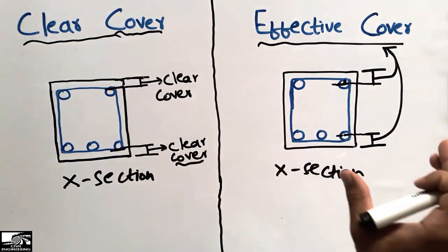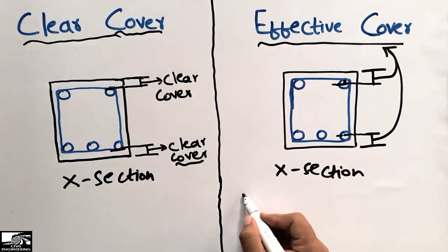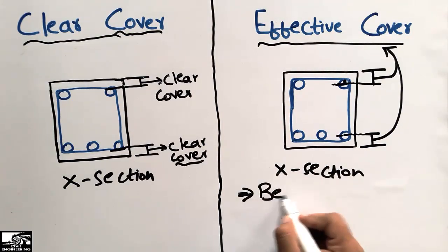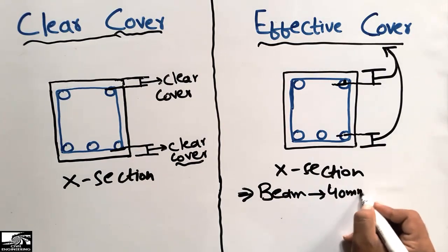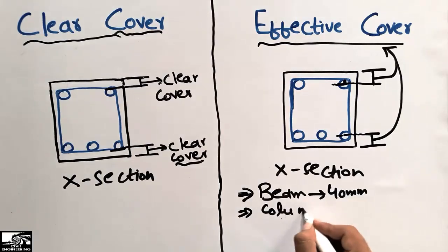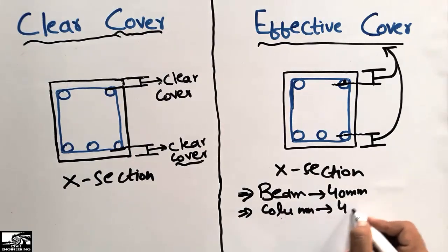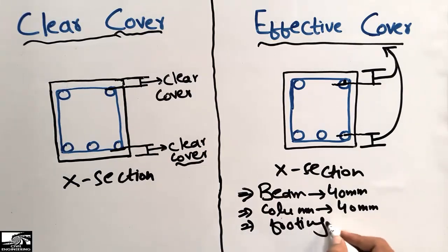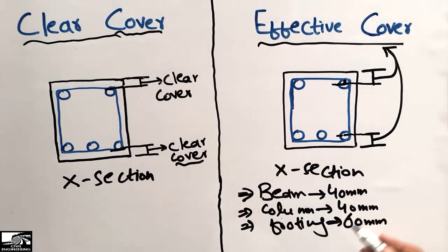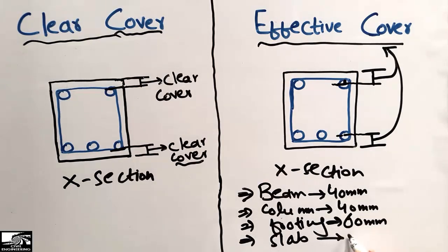The clear cover values for different structural members are: for a beam, 40 mm; for a column, 40 mm; for a footing, a minimum of 60 mm; and for a slab, it is usually 20 or 25 mm.